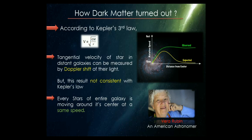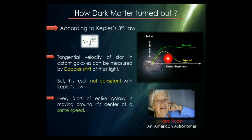But what Vera Rubin found was different. She was an American astronomer who made a tremendous contribution in the field of the motions of stars in distant galaxies. She concluded that every star in the entire galaxy moves around its center at the same velocity — whether it is near the center or at the edge of the galaxy. This gives us the green line, which is the observed result. Notice this contradiction between observations and expectations — the two graphs do not match.